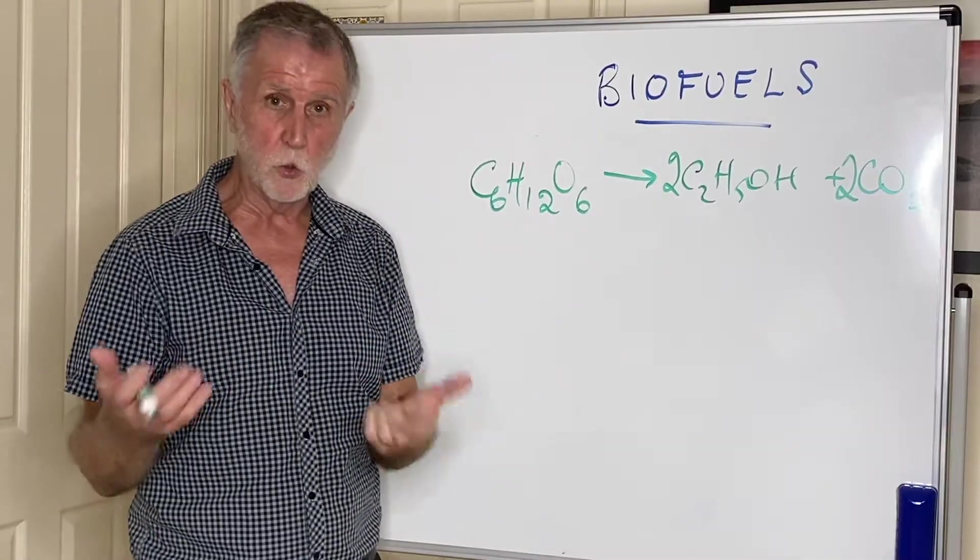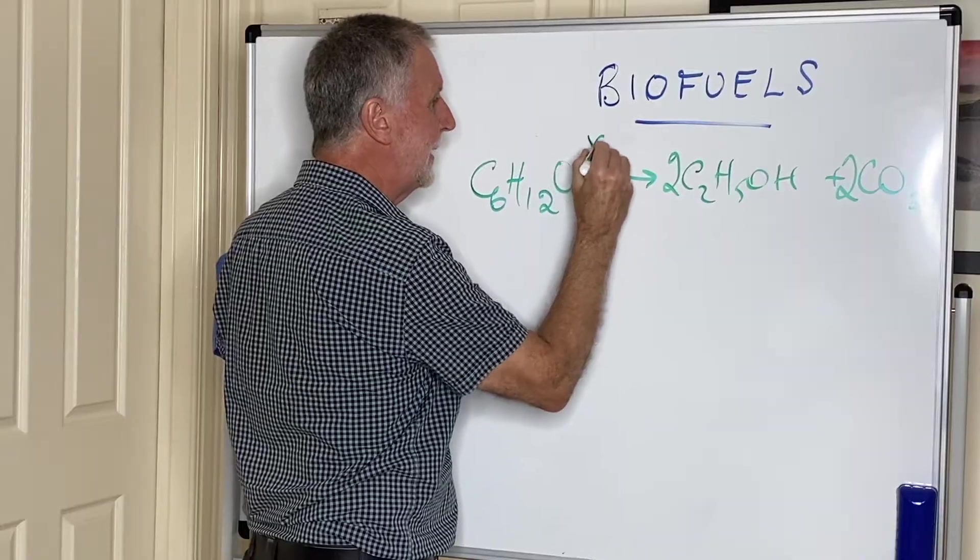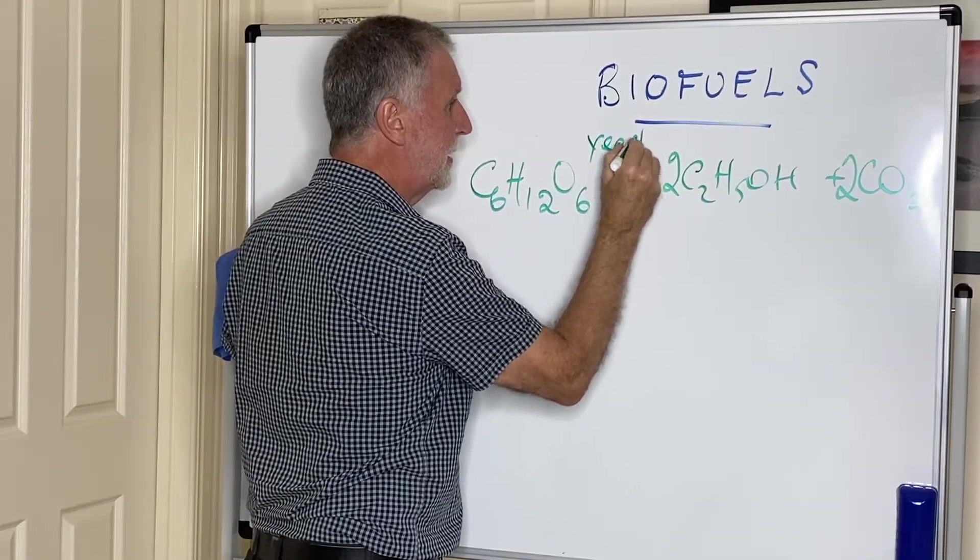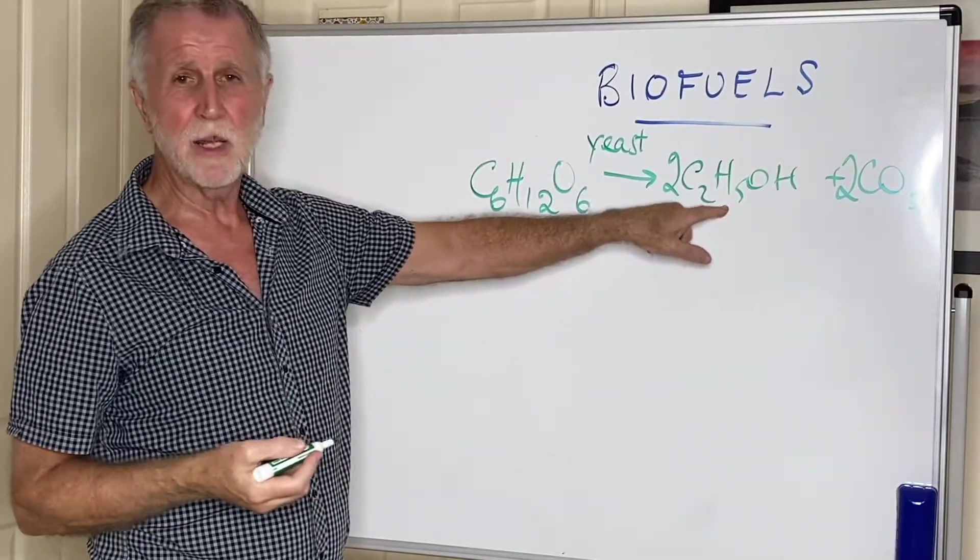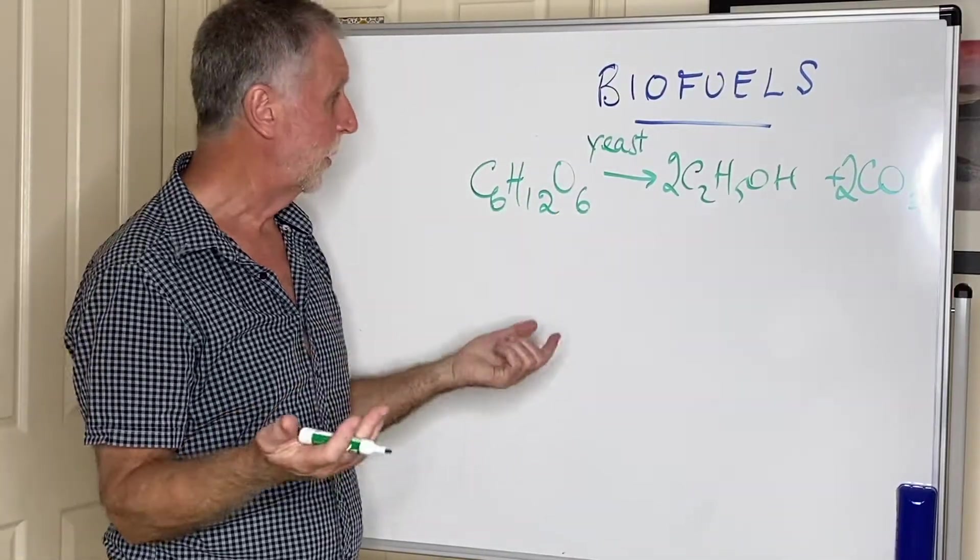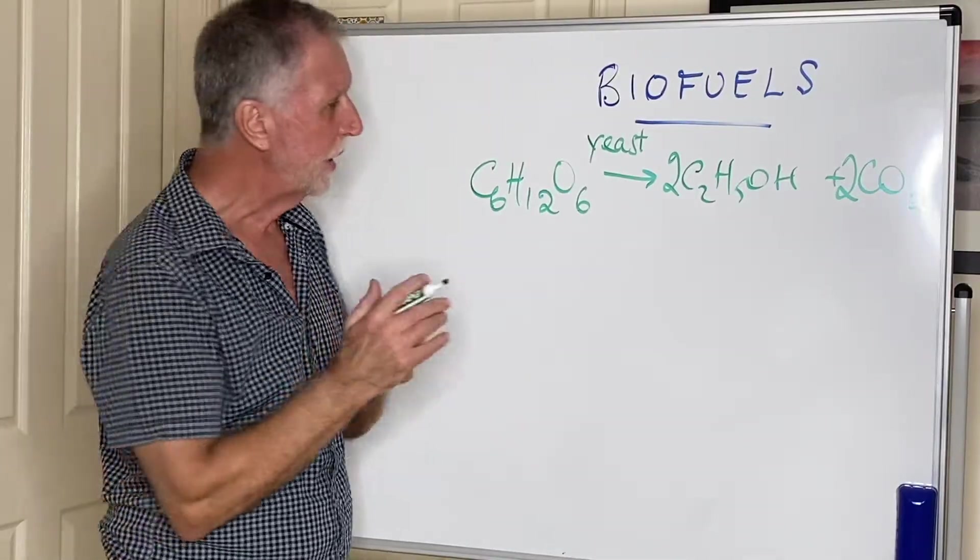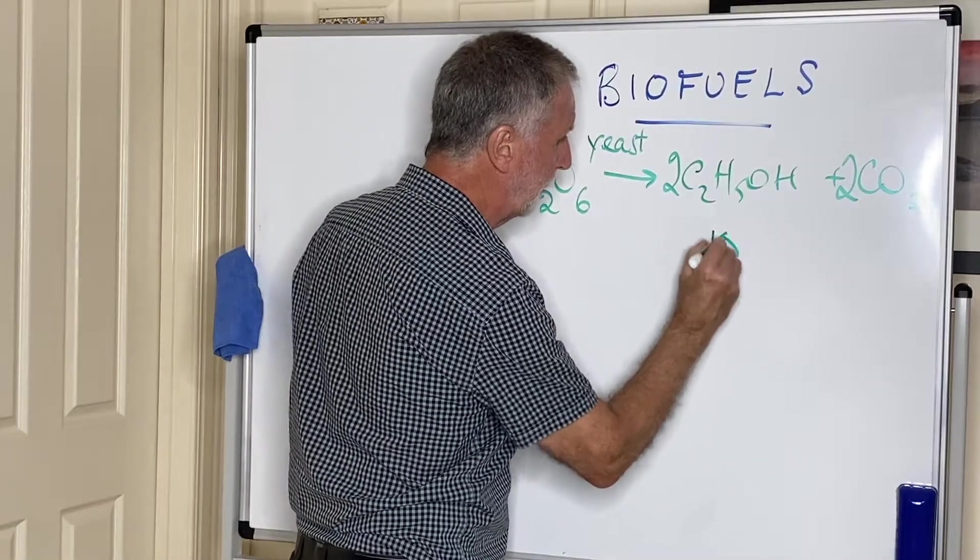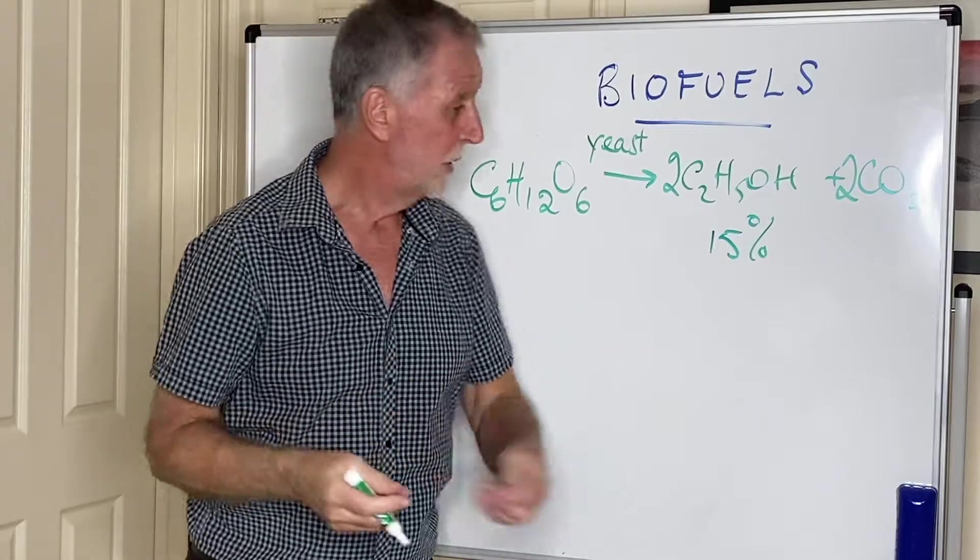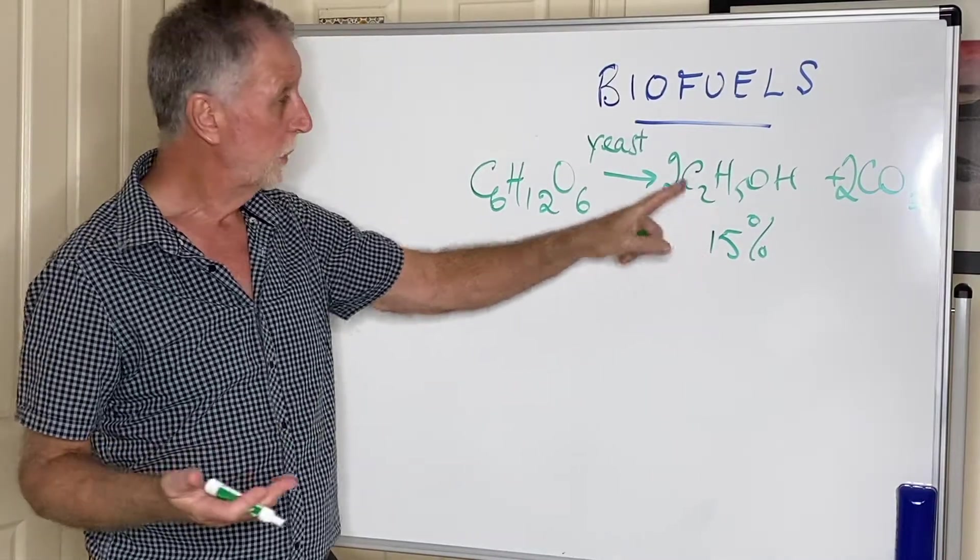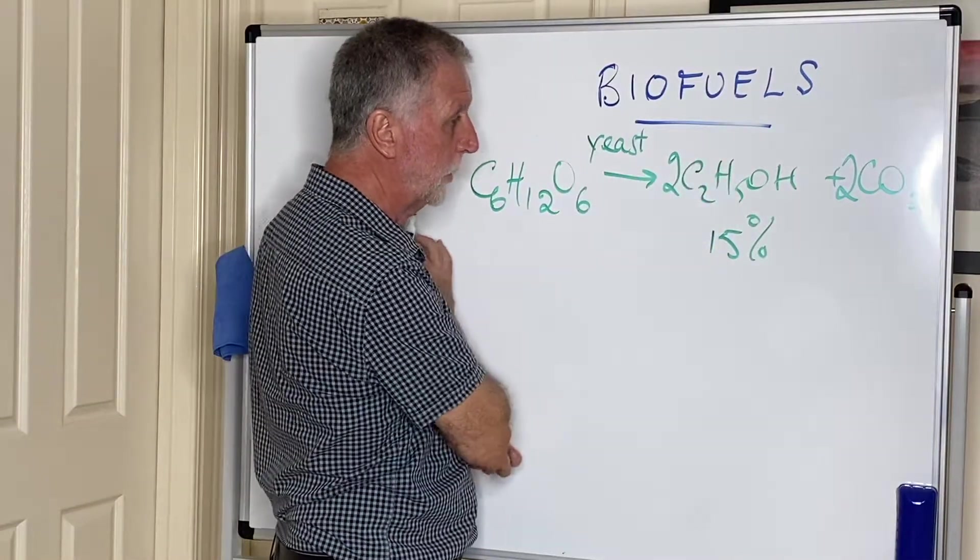The only problem here is we're using the enzymes in yeast, and yeast is a living organism, a fungus. Unfortunately, the waste product ethanol that it gets rid of during metabolism poisons the yeast, and you can't get much more than about 15% ethanol if you're lucky. So it's a pretty poor yield. This is of course how we make alcoholic drinks—beers, wines, and so on—these are made by the process of fermentation.